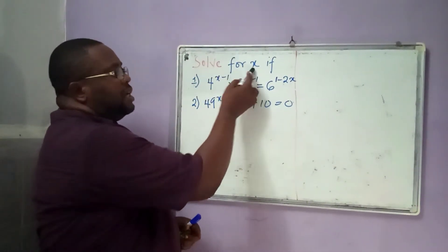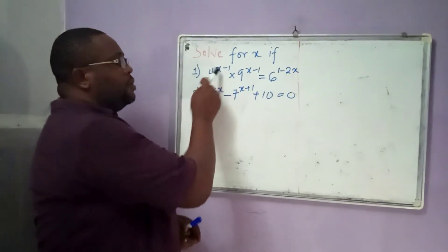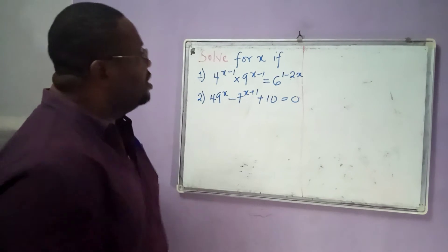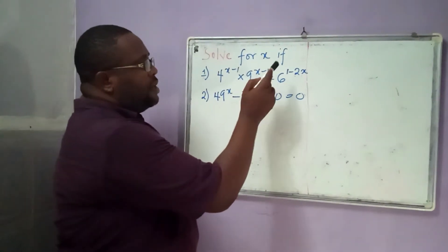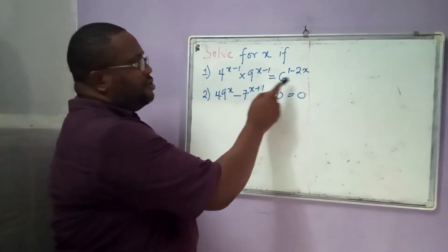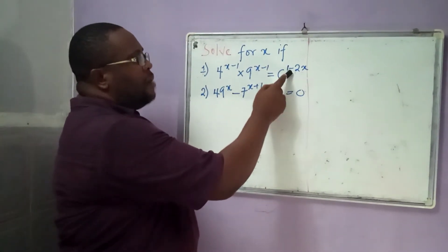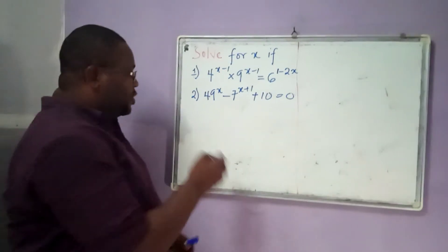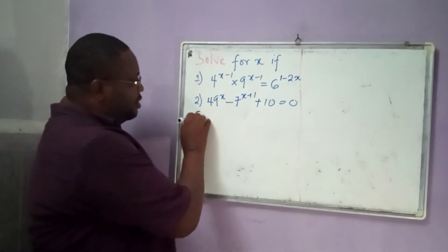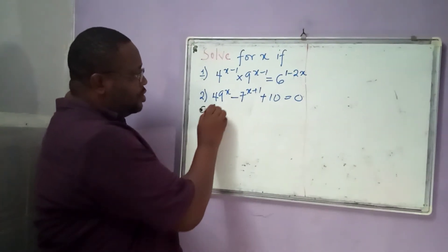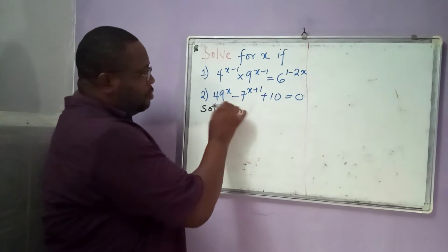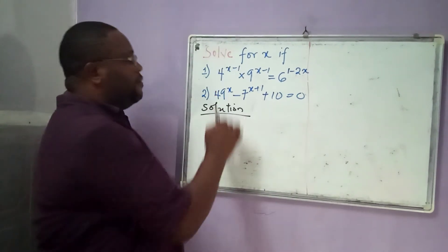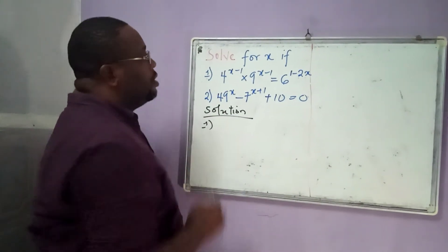Solve for x if number 1: 4 to the power x minus 1, times 9 to the power x minus 1, is equal to 6 to the power 1 minus 2x. Let's quickly write here — solution. Now we begin with the first one, number 1.